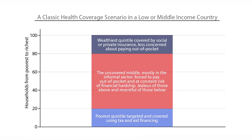How might a country start on this route toward financing its health system? A typical starting situation is that the richest quintile of the population are covered — perhaps through social insurance schemes or because they're wealthy enough to pay user fees. Governments often attempt to cover the absolute poorest through free health cards, but these services tend to be very poorly financed and inadequate for people's needs. The major problem is that the majority of the population remain uncovered, which is bad for their health status and politically untenable.